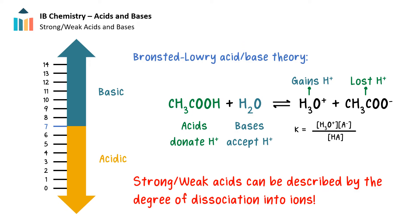We know that acids are proton donors and bases are proton acceptors based upon the Bronsted-Lowry definition of acids and bases. We also know from previous studies that we can describe the extent to which a reaction proceeds with the equilibrium constant and equilibrium expression. We can now apply these concepts to acids and bases to understand the concept of strong acids vs. weak acids and strong bases vs. weak bases.